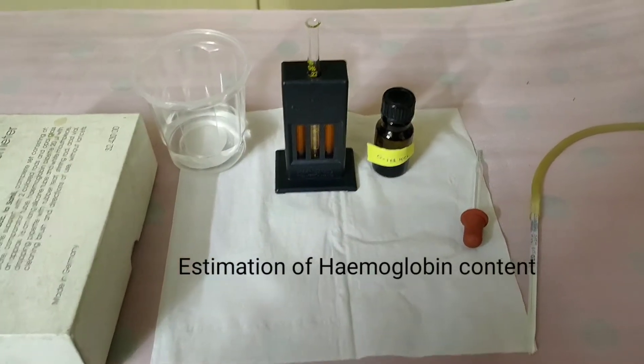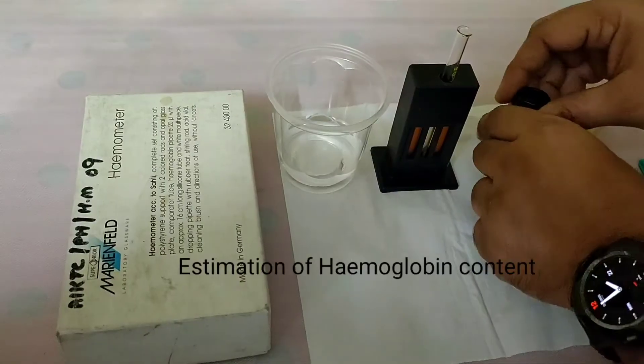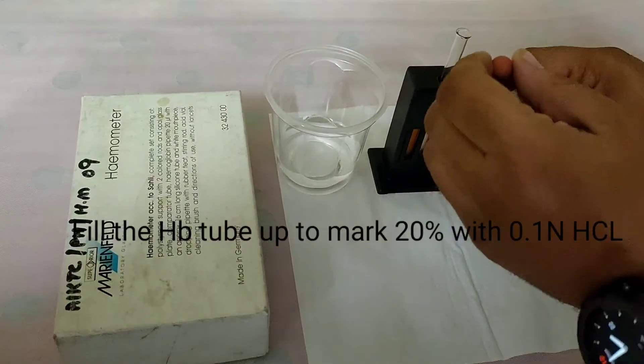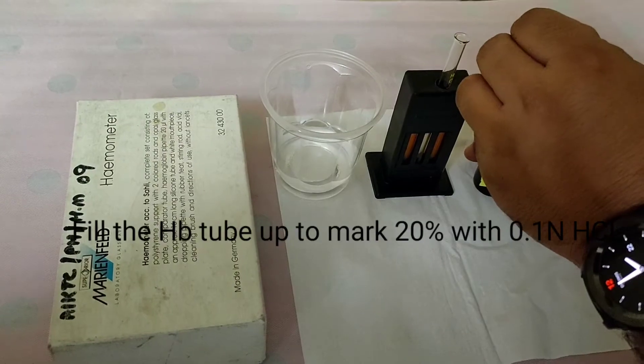Everyone, let's perform the practical estimation of hemoglobin content. First, fill the HB tube up to the mark 20% with 0.1 normal HCL.